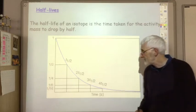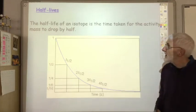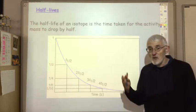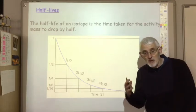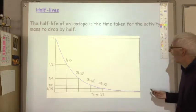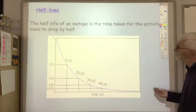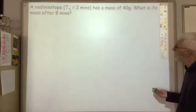If the half-life of a radioisotope is 10 days, we can't do anything to change that — it will always be 10 days. There are quite a lot of numerical questions you can get asked about half-lives.